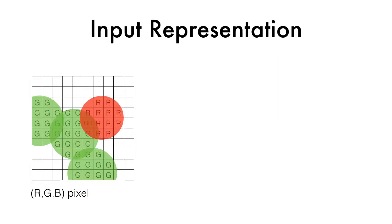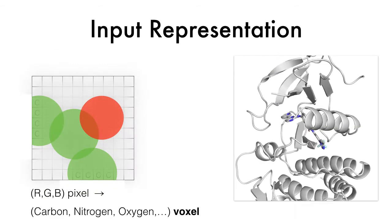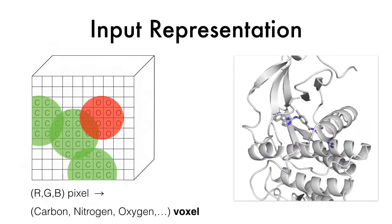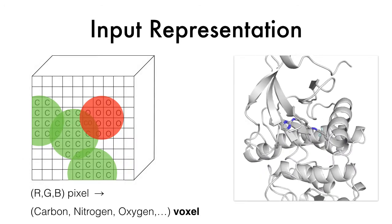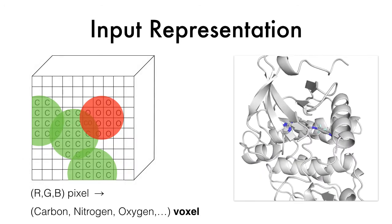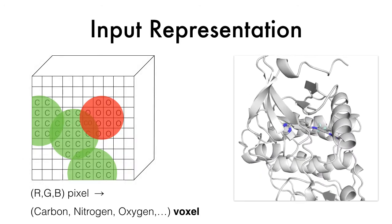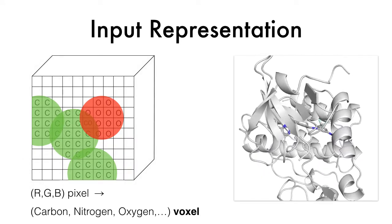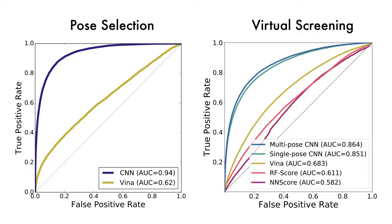For our input, instead of a 2D grid of RGB values, we use a 3D grid of atom-type values that fully captures the spatial and chemical relationships of the structure. By training convolutional neural networks with this input, we have achieved substantially better results than traditional approaches.